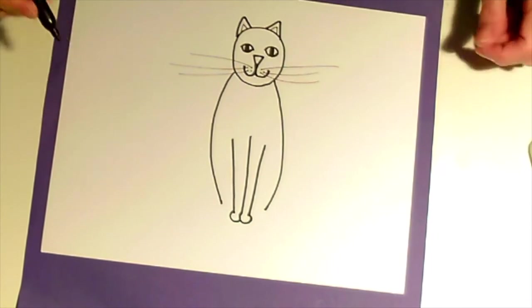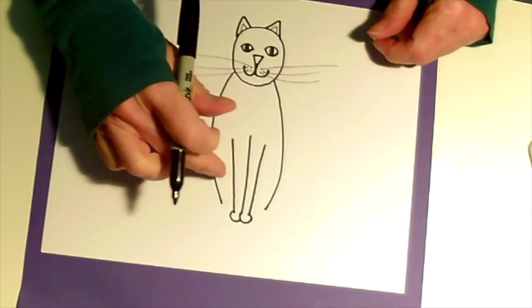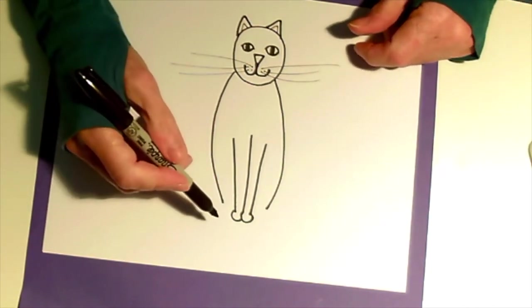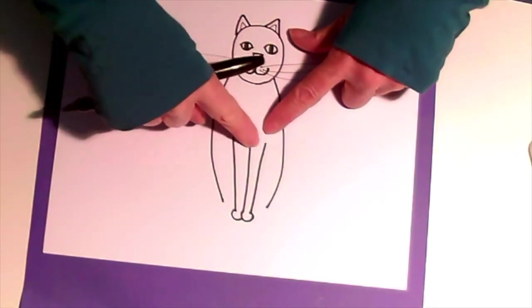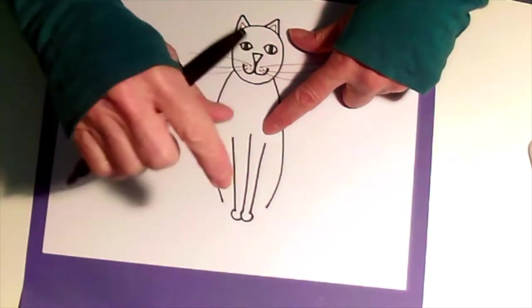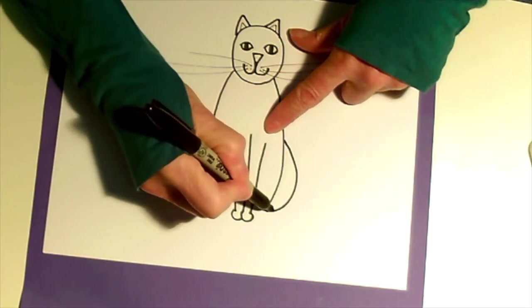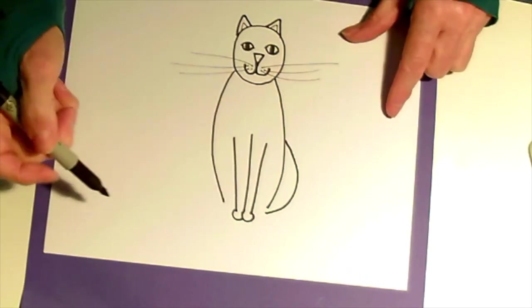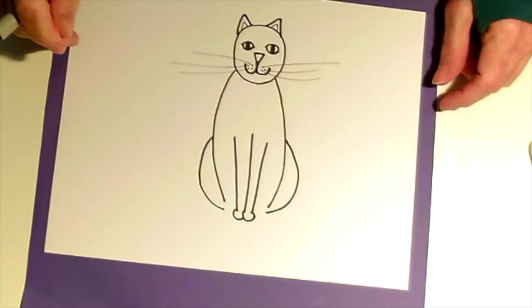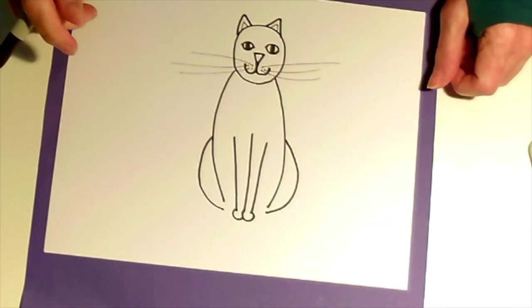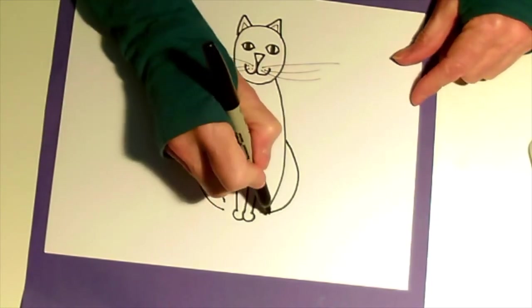Cats have four legs, so we need what's called the hind legs. So somewhere near where you started the top of those front legs, draw a half circle on one side and a half circle on the other side. Those are going to be the back legs or the hind legs.